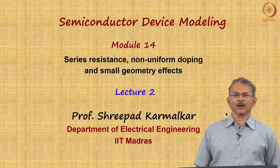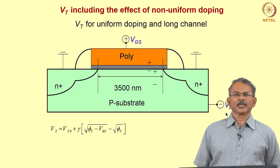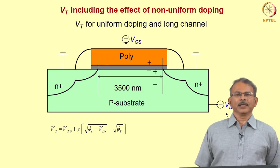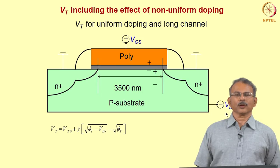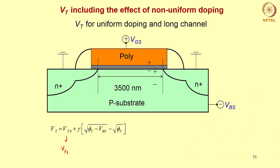Let us continue with our discussion on series resistance, non-uniform doping, and small geometry effects. We recapitulate that the threshold voltage for uniform doping and long channel is given by Vt = Vt0 + γ(√(φt - Vbs) - √φt), where Vt0 is the flat band voltage plus γ√φt, and φt is twice φf plus 6Vt plus φt.